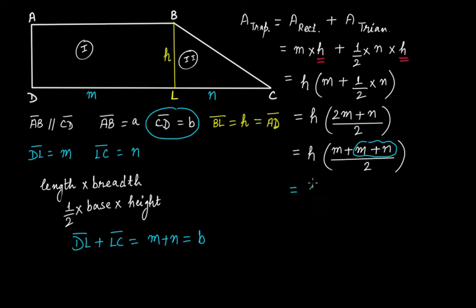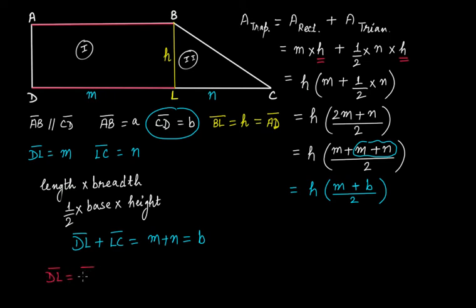So putting B in, this becomes H × (M + B) / 2. Now, this is a rectangle, so DL equals AB. We know DL is M, and AB is A, so M equals A. Therefore, substituting M with A, we get H × (A + B) / 2.